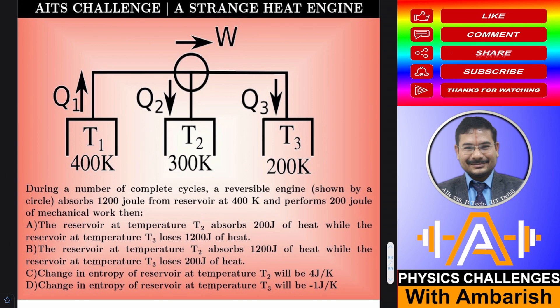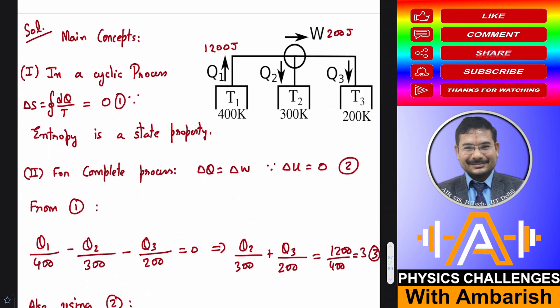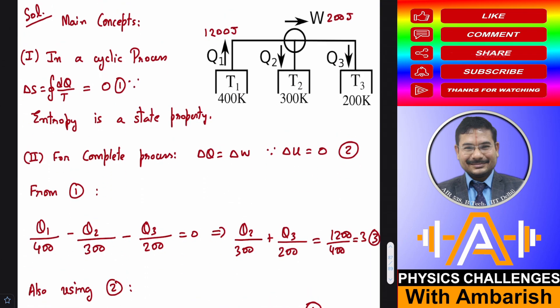So let's see. What are the main concepts involved here? You know that entropy is a state property and not a path property. And therefore when we go in an entire cycle, the change in entropy must be zero.